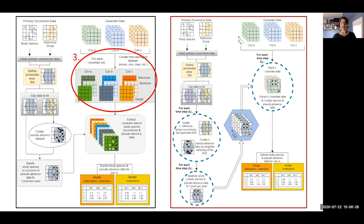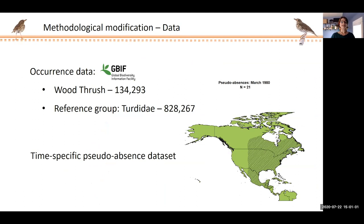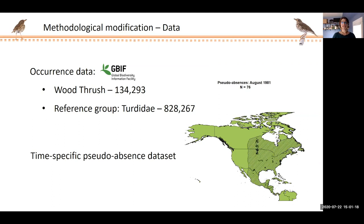So I had a plan — now I had to select the appropriate species to test these modifications with. I chose to test my proposed workflow modifications with the wood thrush, a cute little brown songbird with a predictable seasonal migration between summer breeding areas in the northeastern US and southeastern Canada and wintering grounds in southeastern Mexico and Central America, and for which an obscene amount of observation data are available, as you can see by the annual accumulation of records on the right. In fact, I had so much data that I actually had to reduce the study period from 1980 through 2015 to 1980 through 2010. After cleaning, I still had well over 130,000 wood thrush records and more than 800,000 records from the reference group to generate my time-specific pseudo-absence data set for the 1980 to 2010 study period. So as not to waste all that extra data, I set aside wood thrush data from 2014 to 2015 to use as an additional model evaluation data set.